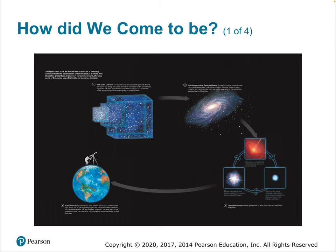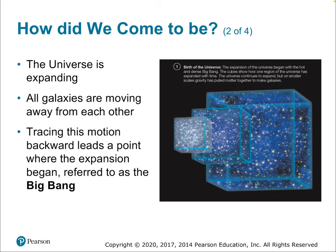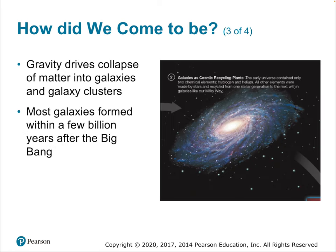Our planet is about a third as old as the universe itself. Earth is composed of heavy elements created in the cores of previous-generation stars that blew up and spread their matter throughout the universe, which then condensed to form terrestrial planets like ours. The universe is expanding from the Big Bang — all galaxies are moving away from each other, and tracing this motion backwards leads to a single starting point. Gravity drove the collapse of matter into galaxies, and most galaxies formed within a few billion years after the Big Bang.